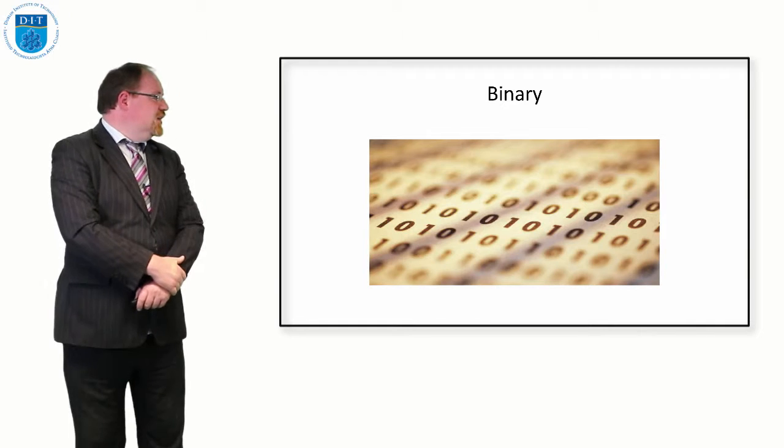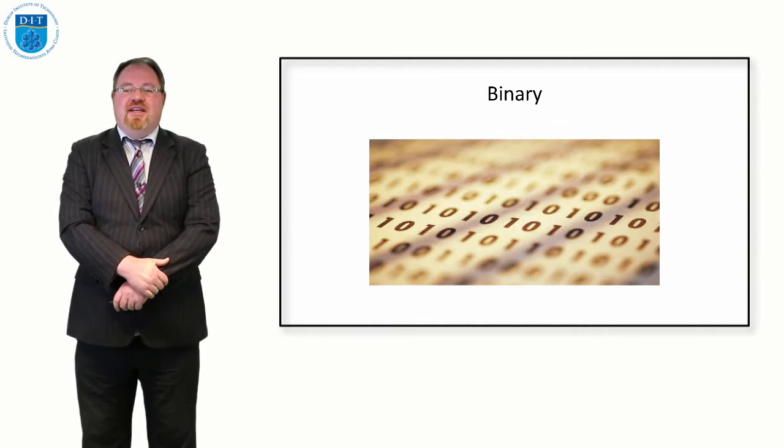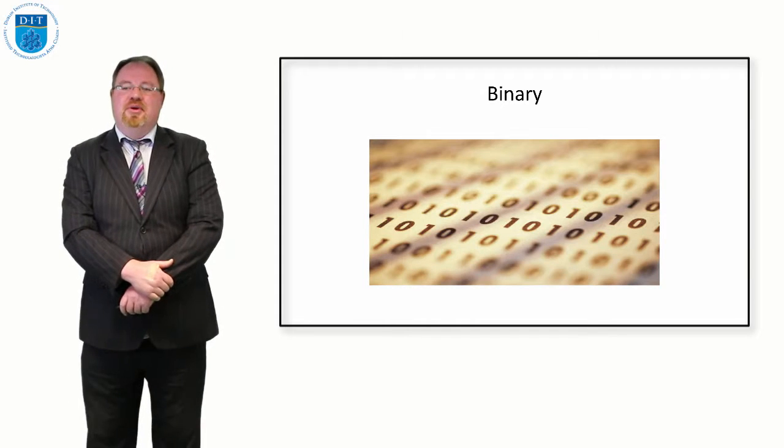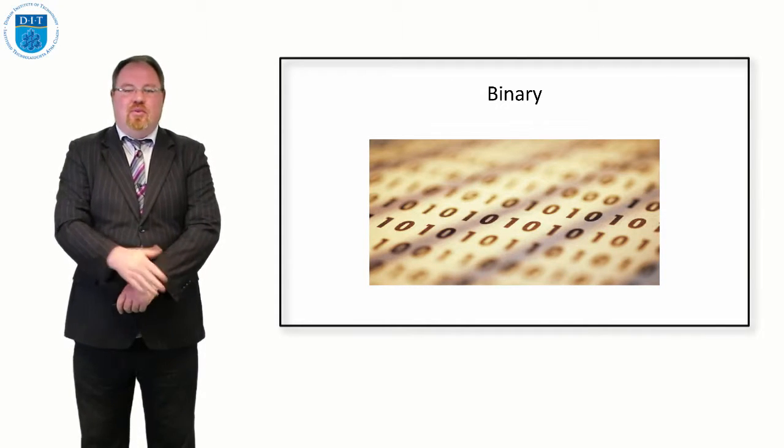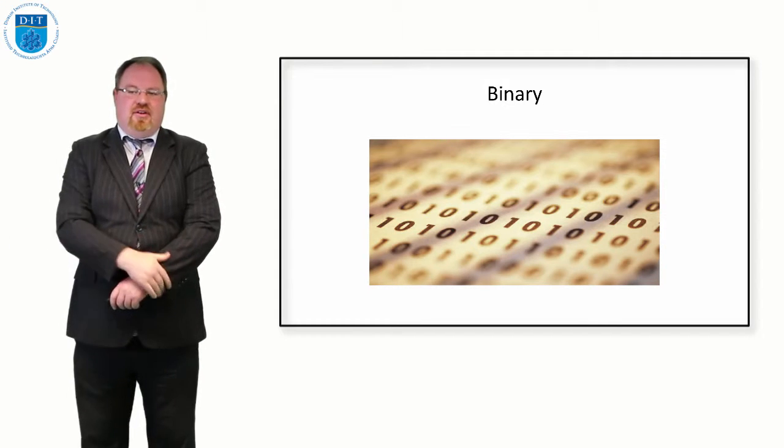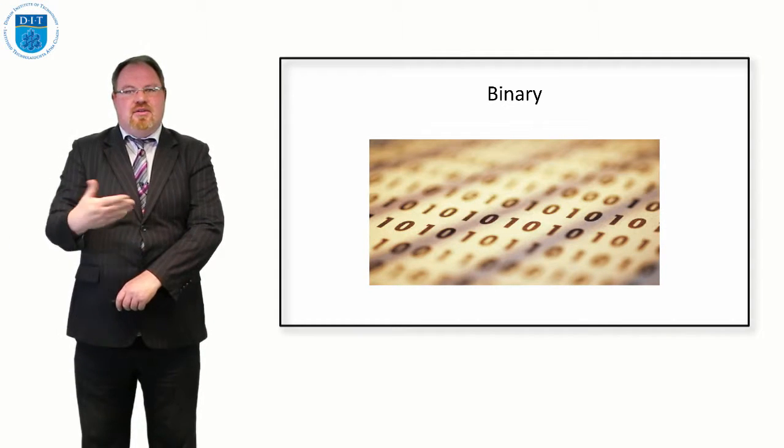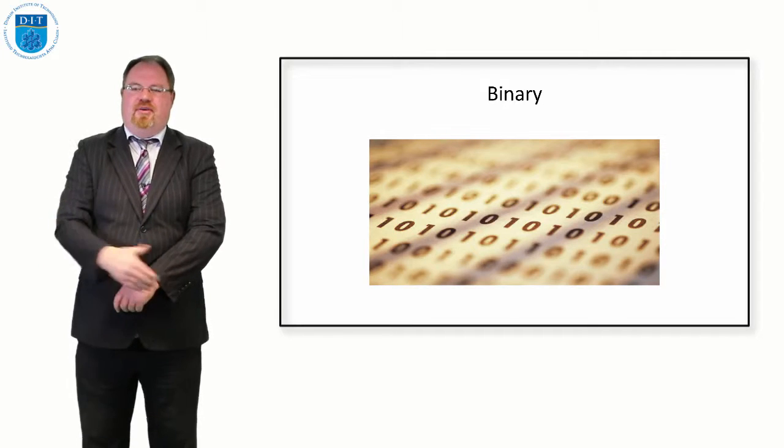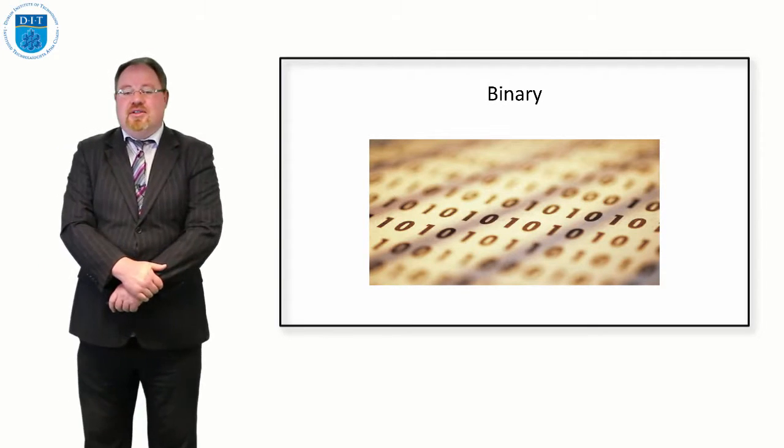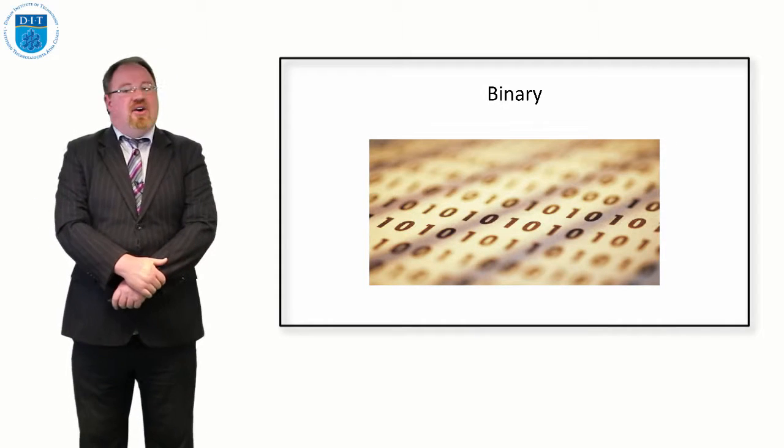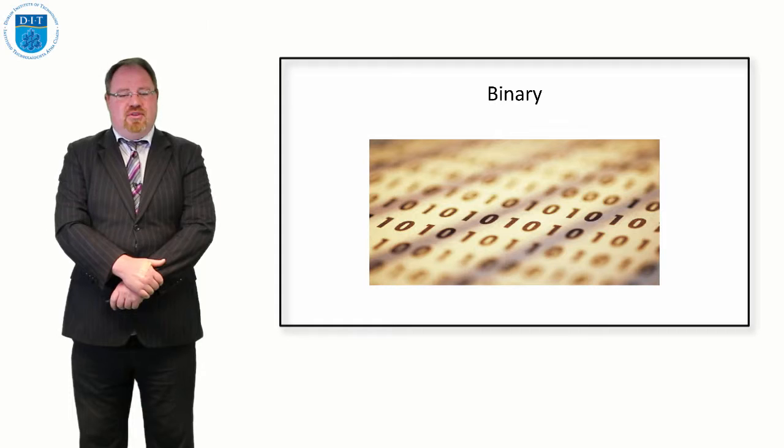Historically, computer programs were written in this way—they were written in binary. If you look at something like the Jacquard loom, which was a programmable weaving loom, it essentially had cards you could put in, like punch cards that had holes or not holes, and they were representing ones and zeros. Unfortunately, humans aren't good at strings and strings of ones and zeros.